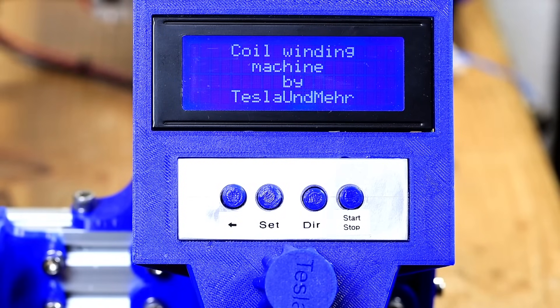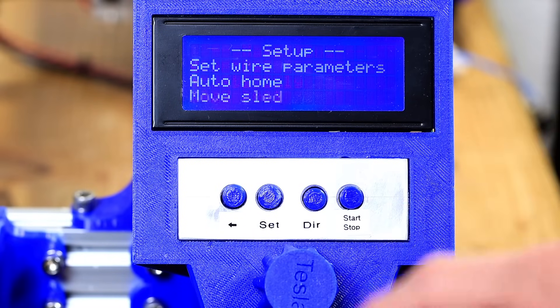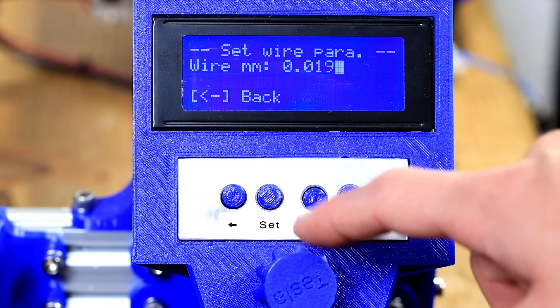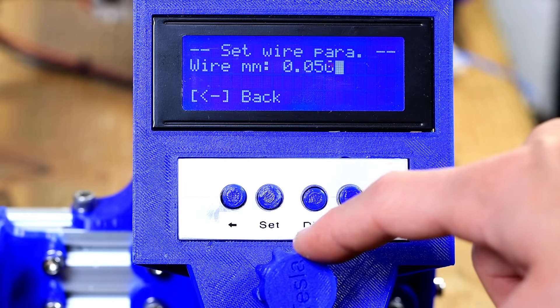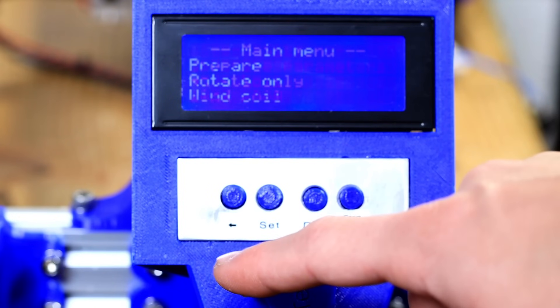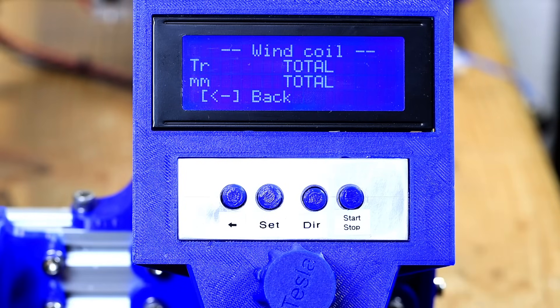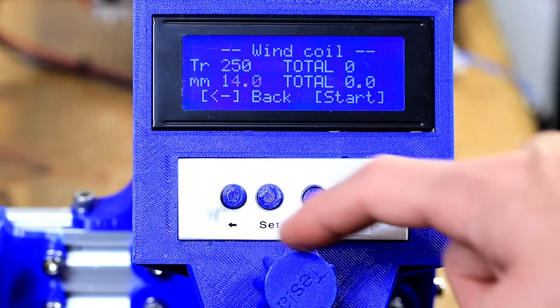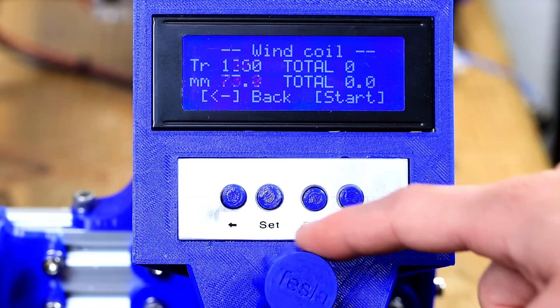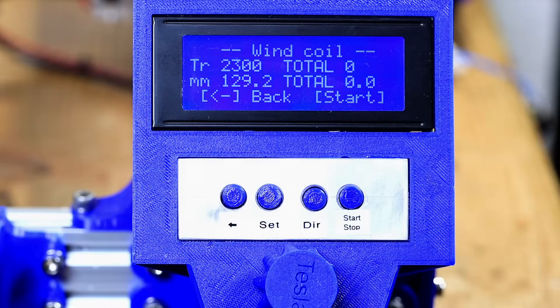We use this control panel to set up our machine. First we have to enter the wire parameters. Then we only have to set the length of the coil. This will be about 13 cm. Also the number of turns is calculated directly. A good job Life. And go!